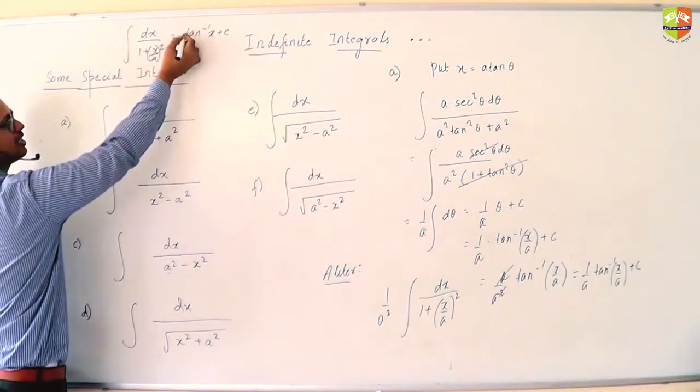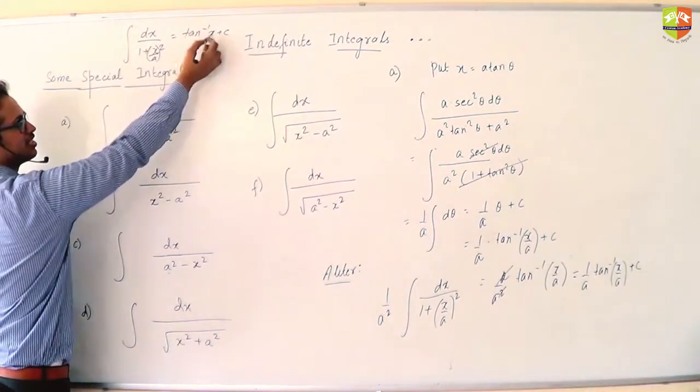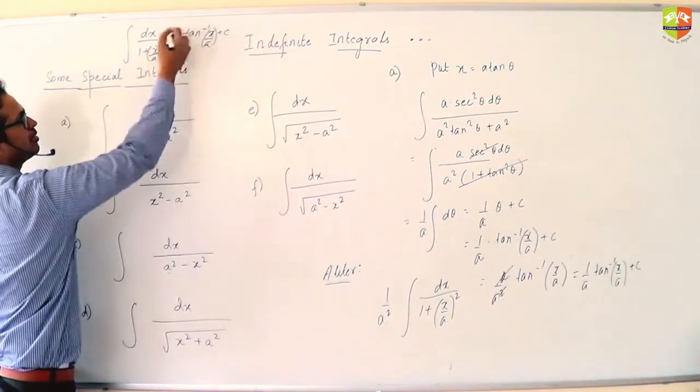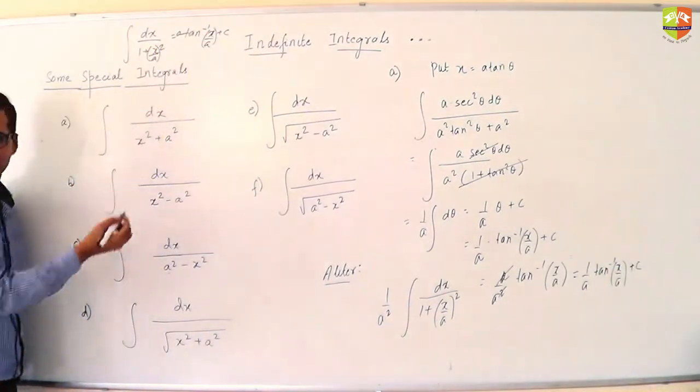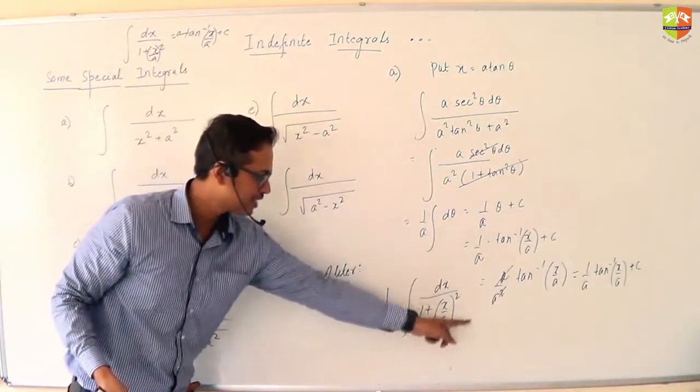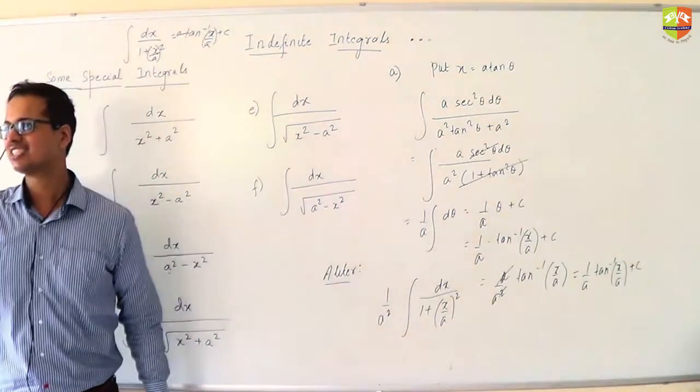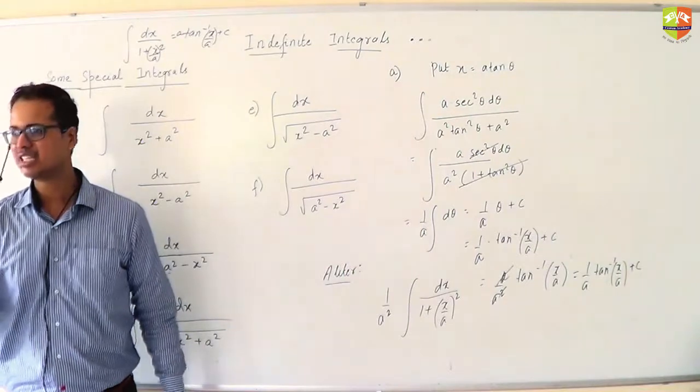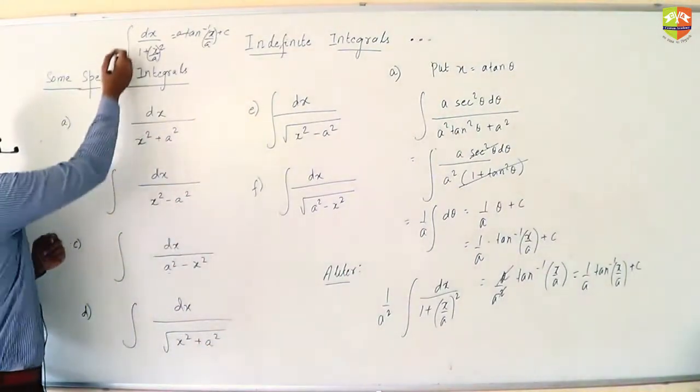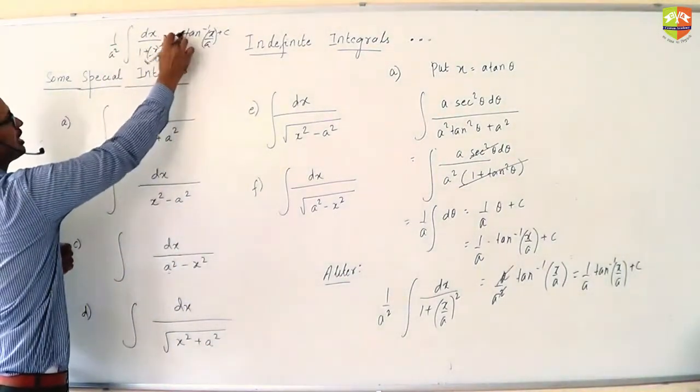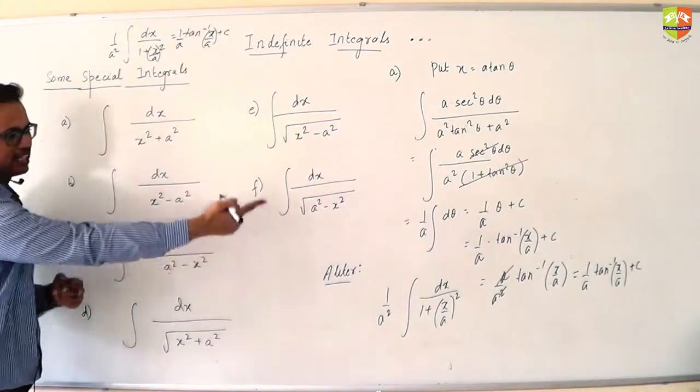If I make this as x by a, what will happen to the result? This will become 1 by a and 1 by a will divide and go up. So this is what happened over here. Generalization, reverse chain rule. And 1 by a squared is outside. So 1 by a squared made this as 1 by a. That is what is the result.